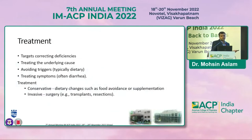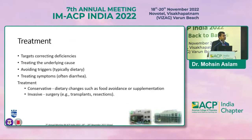Treatment involves correcting the deficiencies, treating the underlying cause, and avoiding triggering factors, particularly through diet modification and treating symptoms like diarrhea and abdominal pain. Treatment is usually conservative with dietary changes such as food avoidance or supplementation. However, invasive procedures and surgeries may be needed as in Crohn's disease where strictures form requiring resections, or transplants in cirrhosis of the liver.